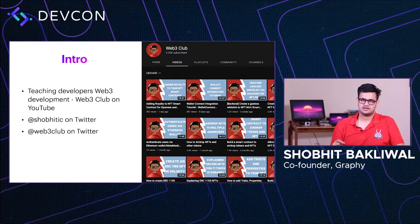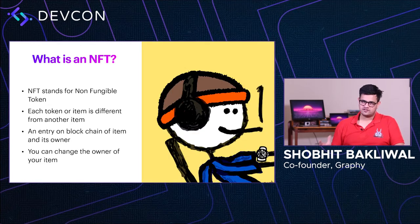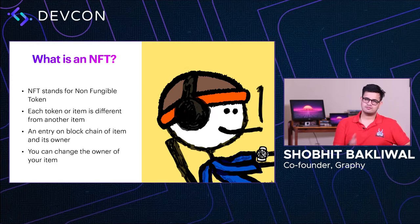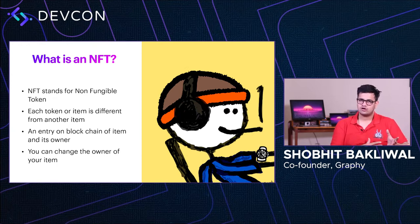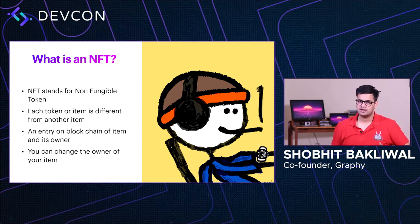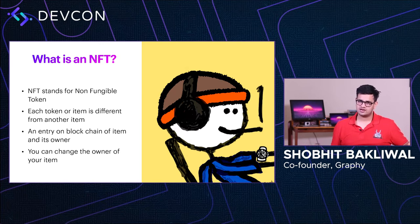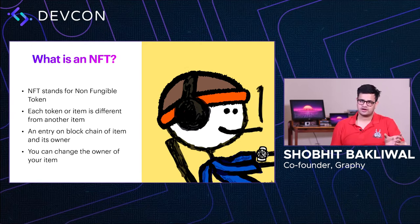NFT stands for non-fungible token. What that actually means is that every item in the collection is different from the previous or the next item. Essentially what we do is store a mapping of who owns a specific item on the blockchain, and because it's a public blockchain, everyone agrees on who is the owner of a specific token. You can change the owner of your own NFT — in the mapping of token ID and owner, you change the owner for your token ID, and that is how you transfer an NFT.